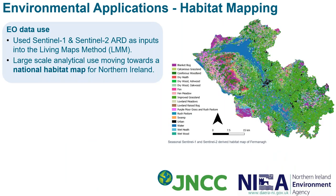Another example of a habitat map currently being produced is work that we at JNCC are doing with the Northern Ireland Environment Agency to produce a nationwide habitat map for Northern Ireland. This mapping method uses both Sentinel-1 and Sentinel-2 data and is already picking up data provided by the Simple ARD service. The map shown here is of Fermanagh, and this work will now move towards running the method for all counties in Northern Ireland this year.